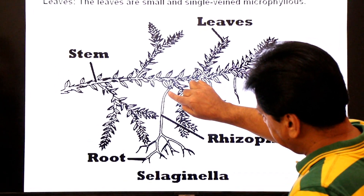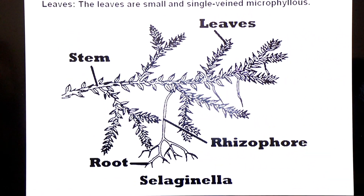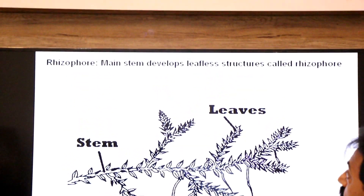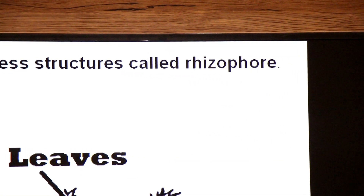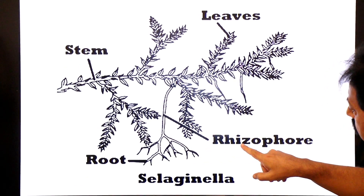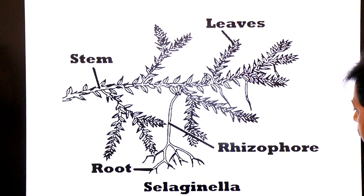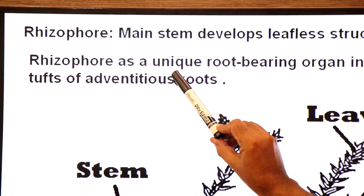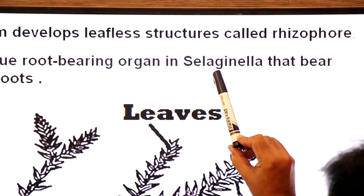Now let's come to the root-bearing organ called rhizophore. The main stem develops a leafless structure called rhizophore. Rhizo means root, phora means bearing — so a root-bearing organ is called rhizophore.